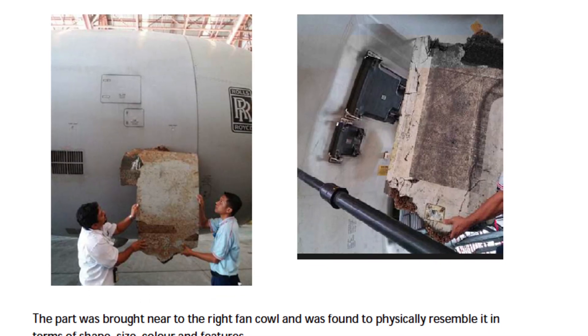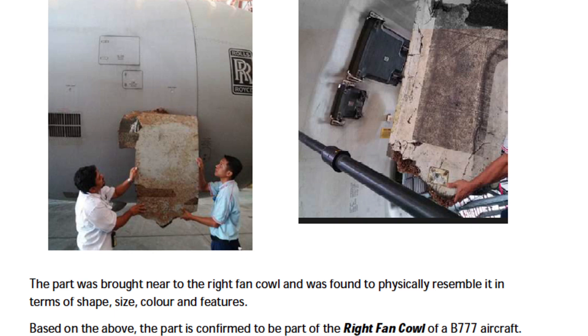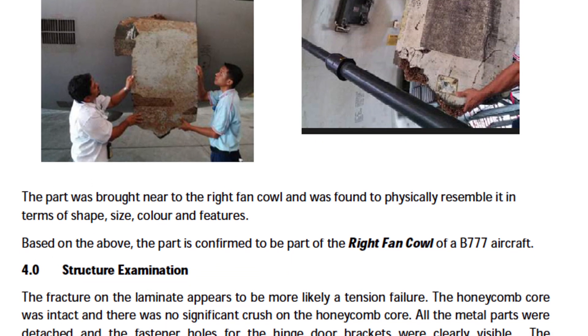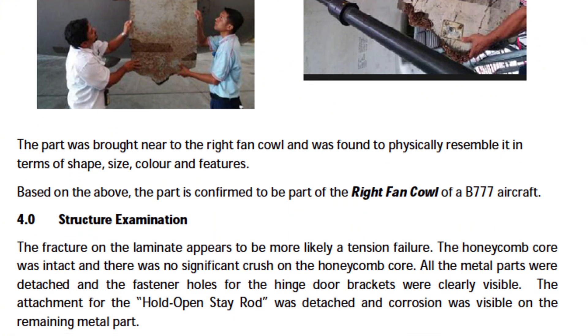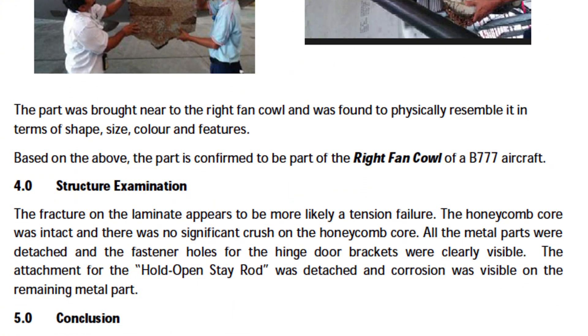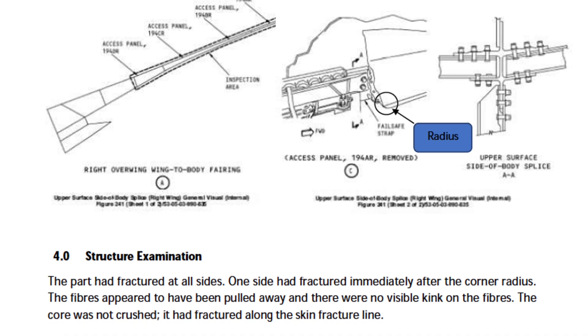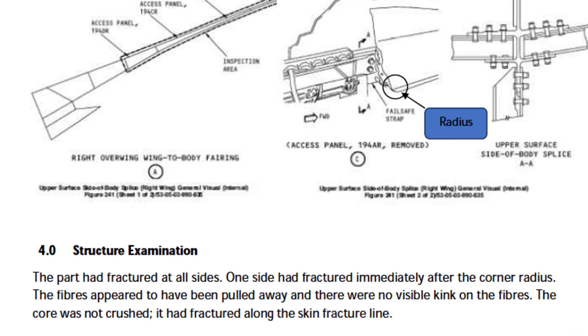What I'm going to do is go through some of these pieces and briefly recap what the Malaysians reported about how they failed. Item six was a right engine fan cowl. Investigators reported: 'The fracture on the laminate appears to be more likely a tension failure. The honeycomb core was intact, and there was no significant crush on the honeycomb core.' A tension failure — a pulling apart. Item seven, a wing-to-body fairing: 'The fibers appeared to have been pulled away, and there were no visible kinks on the fibers. The core was not crushed. It had fractured along the skin fracture line.' Again, a pulling apart — a tension fracture.